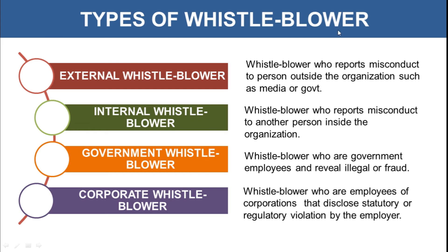There are different types of whistleblower. First is the external whistleblower — a person who reports misconduct about the organization to any outside party, such as the media or government. They are referred to as external whistleblowers because they are complaining to an external body. Internal whistleblowers are those who report misconduct happening in the organization to another person within the same organization, so it stays inside — thus they are referred to as internal whistleblowers.